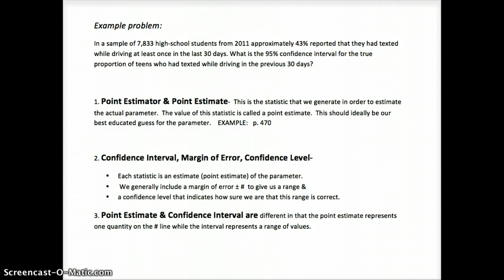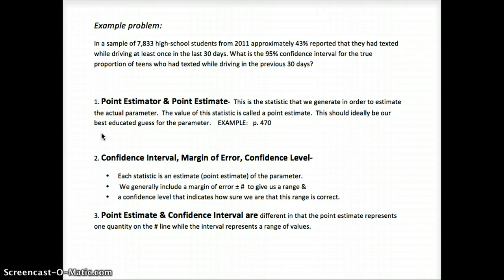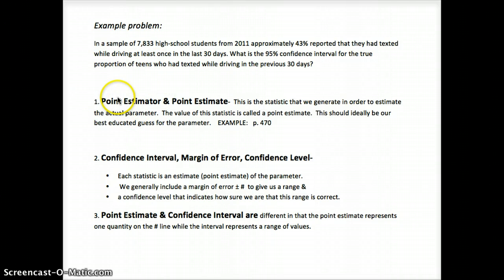P-hat, or sample statistic, will be our point estimator, meaning it's our estimate. We're hoping that it's close to the true proportion if we have an unbiased sample that we took randomly and we have a large enough sample size. So our statistic is our point estimator.